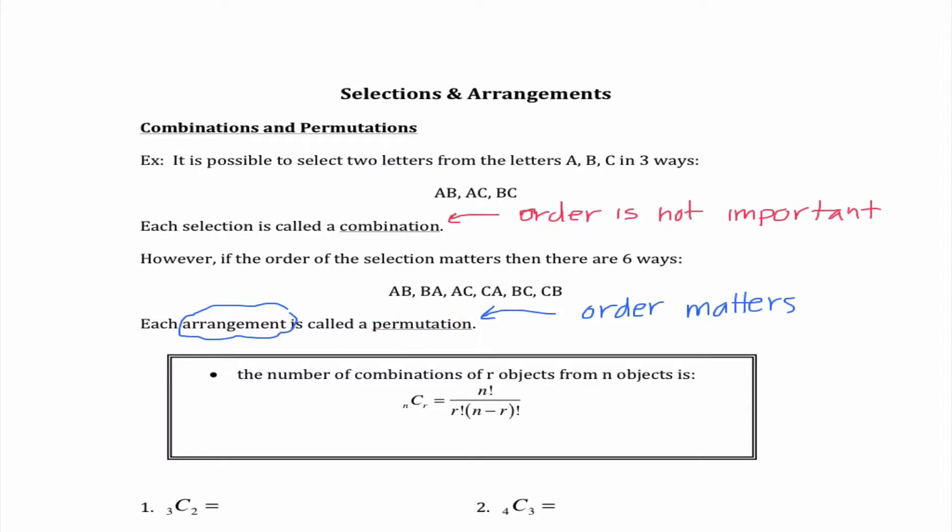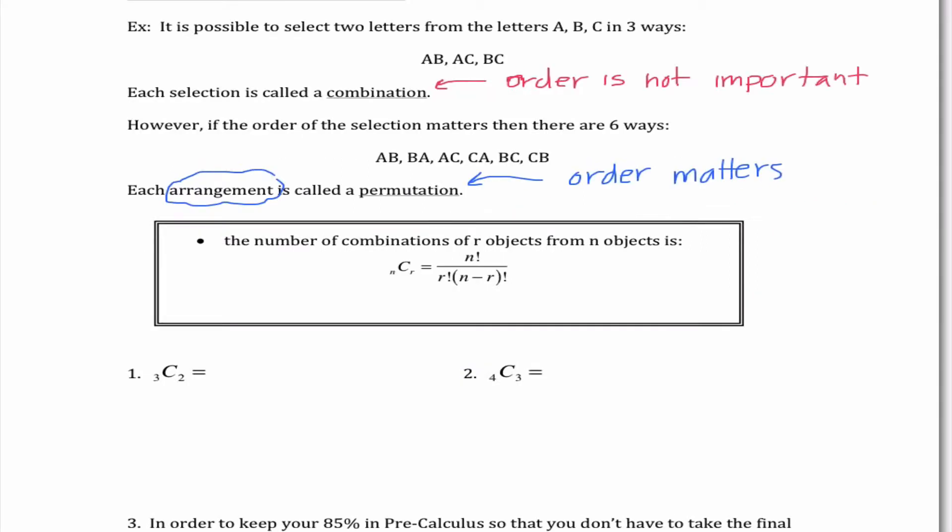When we have permutations there are some terms that we need to be aware of. Arrangement is one of them that we will see quite a bit and that's signaling to us that the order actually matters. So we've previously learned that nCr is n factorial over r factorial times n minus r factorial. We've also learned that we can get to this in our graphing calculator using math and then choosing the probability menu.